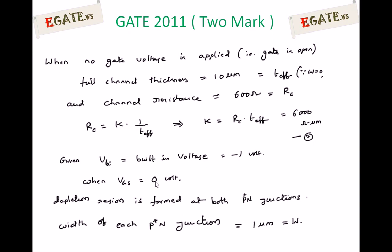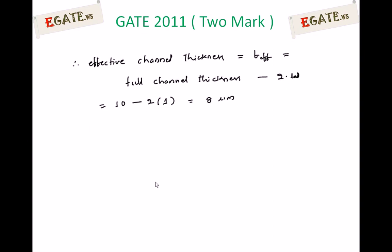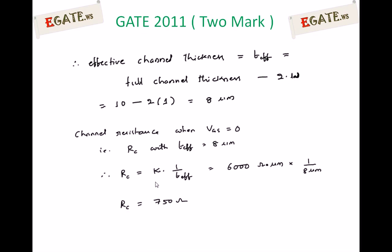Given the built-in voltage of minus 1 volt, when VGS equals 0, the depletion region formed at both P-N junctions is 1 µm each side. To calculate channel resistance at VGS = 0, first calculate the effective channel thickness: T_effective = full channel thickness − 2W = 10 − 2×1 = 8 µm (which is also given in the problem). Channel resistance when VGS = 0: Rc = K × (1 / T_effective) = 6000 Ω·µm × (1/8 µm) = 750 ohms.